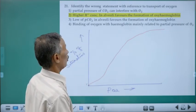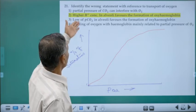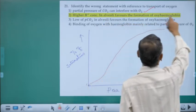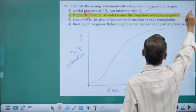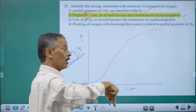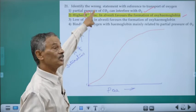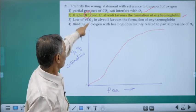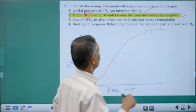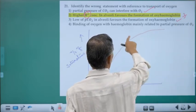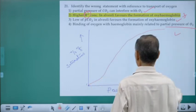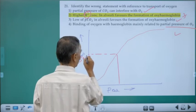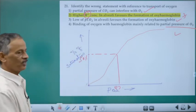Partial pressure of CO2 negatively affects oxyhemoglobin saturation. Hydrogen ion concentration is low in alveoli and high in tissues. Low partial pressure of CO2 in alveoli favours binding of oxygen with hemoglobin. The P50 value — the partial pressure at which 50% saturation occurs — for human hemoglobin is 27 mmHg.